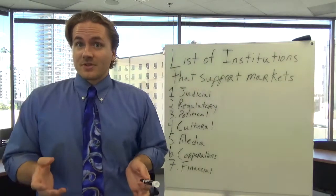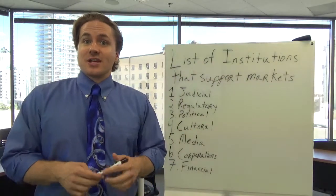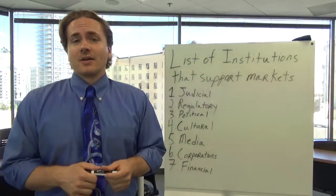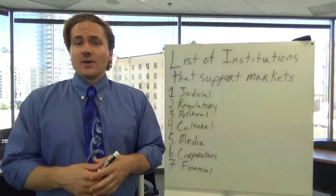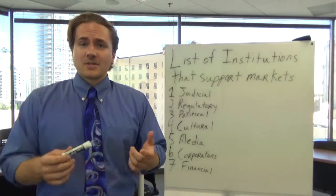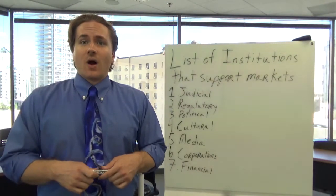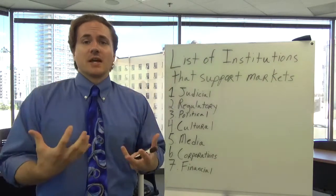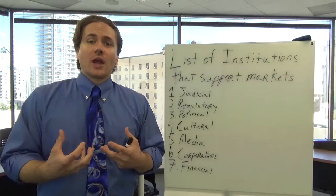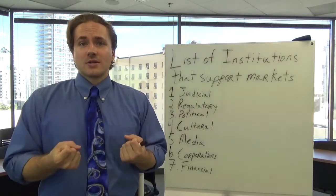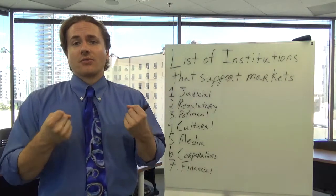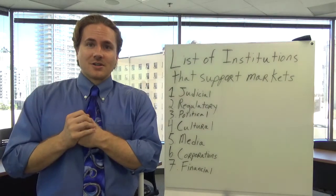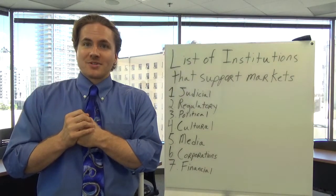If you can think of examples of countries that don't have one of these institutions, absolutely put it in the comments below — I'd love to hear about it. If you have any questions, feel free to put them in the comments and I will respond. In our next video we're going to look at the four rational choice models and the four normative choice ontologies. Looking forward to seeing you then.